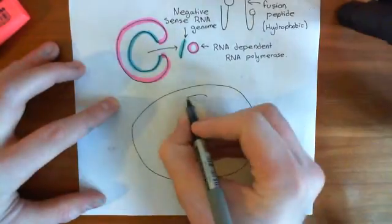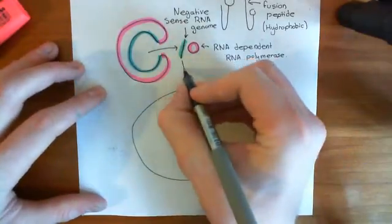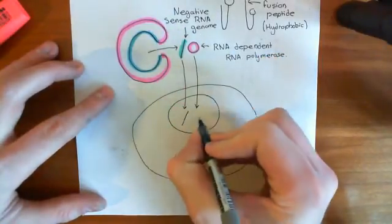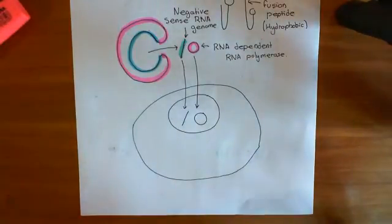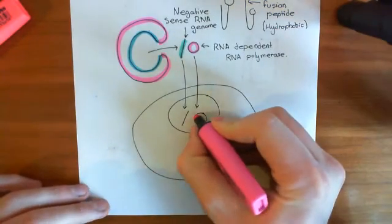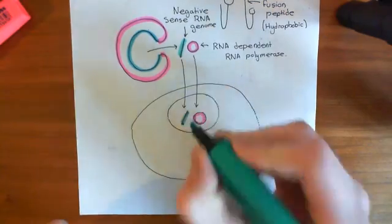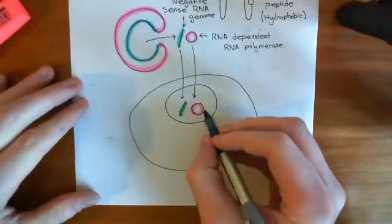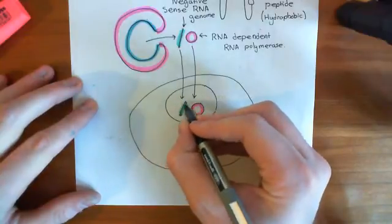The RNA genome and the RNA-dependent RNA polymerase will go to the nucleus of the host cell. At the moment, this piece of negative sense RNA is useless. We need to turn it into positive sense RNA so that we can actually produce proteins. So what's going to happen is this RNA-dependent RNA polymerase enzyme is going to synthesize the positive sense RNA from this negative sense RNA.